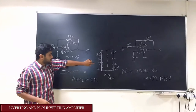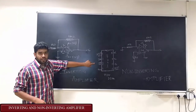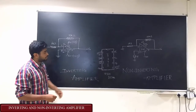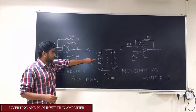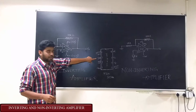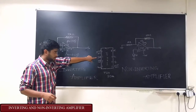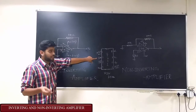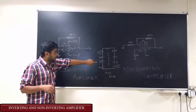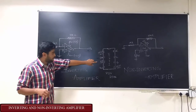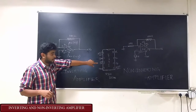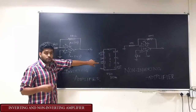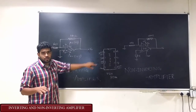This is the pin diagram of IC741. If the input is applied at the inverting pin, then the amplified output obtained is inverted. And if we apply the input at the non-inverting pin, then the amplified output obtained is not inverted.